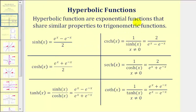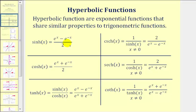Hyperbolic functions are exponential functions, but they share similar properties to trigonometric functions. Notice how there are six hyperbolic functions, and there are also six trig functions. Each hyperbolic function is defined using exponential functions. So if we wanted to evaluate a hyperbolic function, we would just substitute the given value of x into the exponential function, and then simplify.